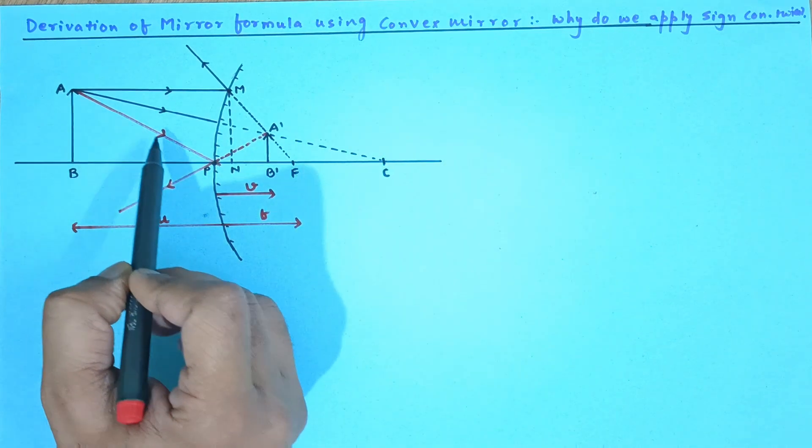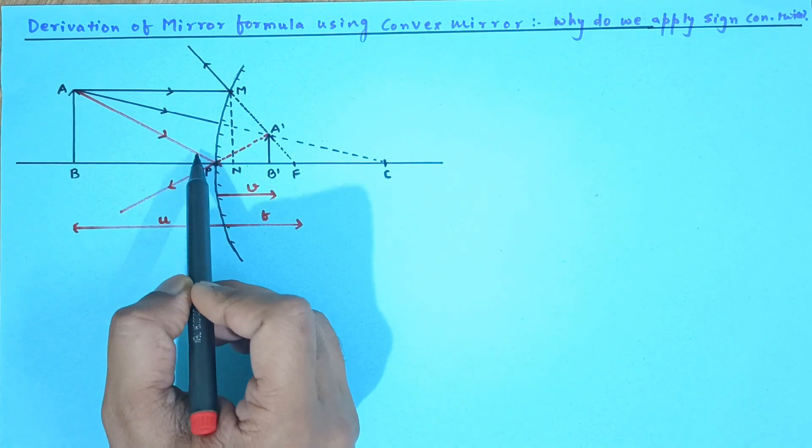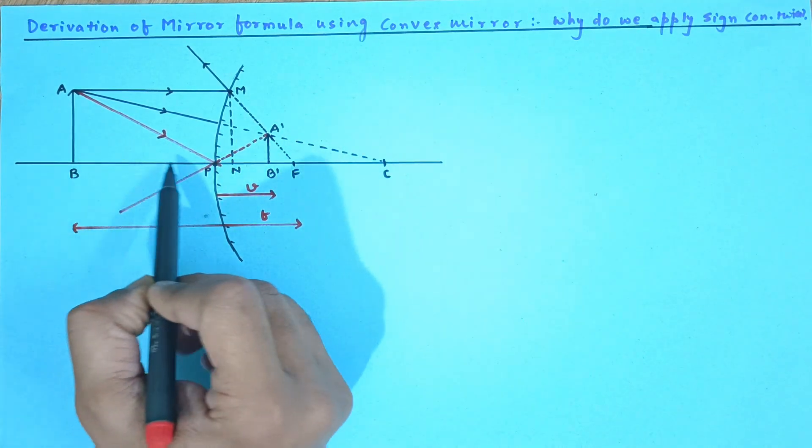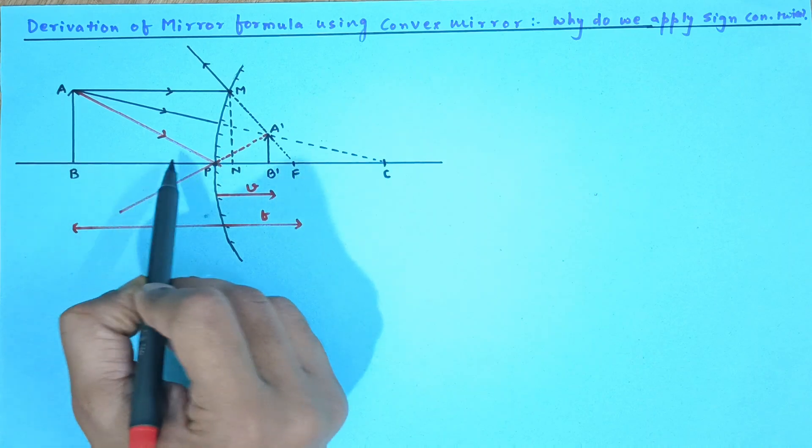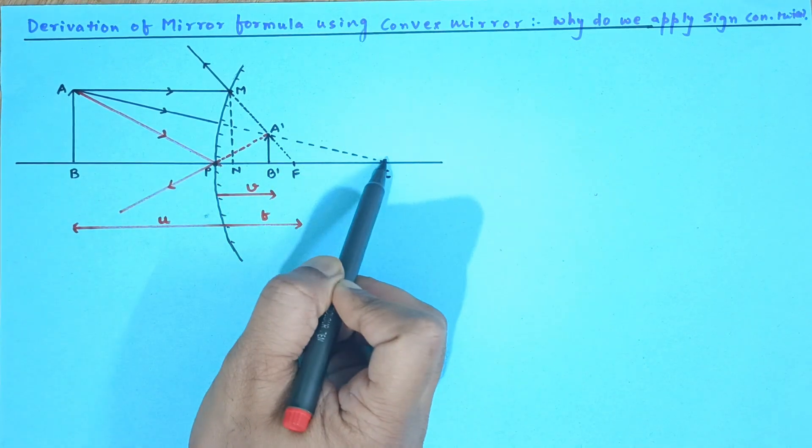Another ray when you pass it through and when it hits the pole, then the principal axis behaves as a normal because the normal passes through C. So from the point of incidence the principal axis passes through C.